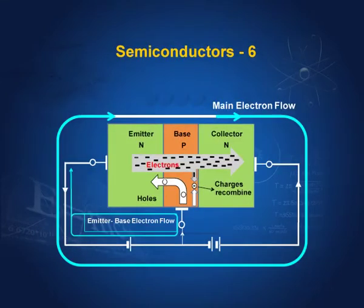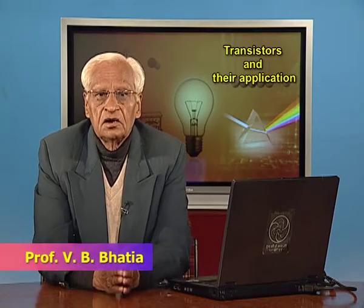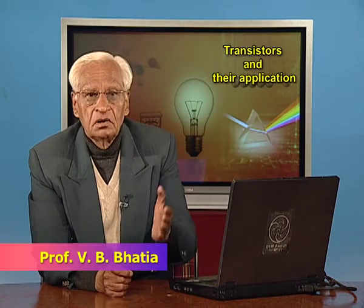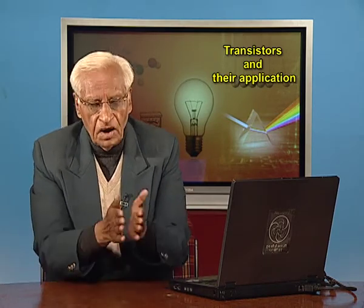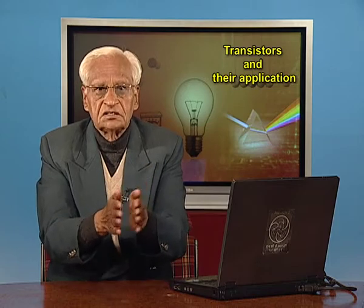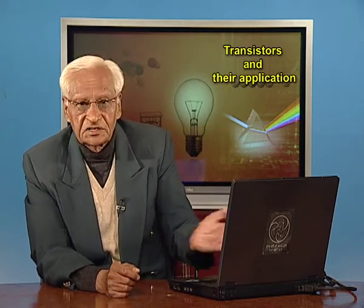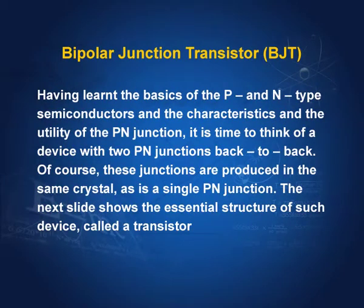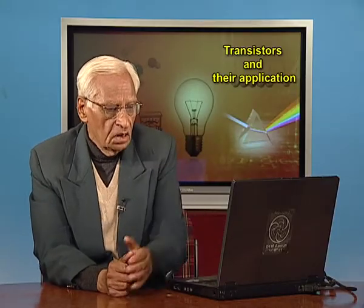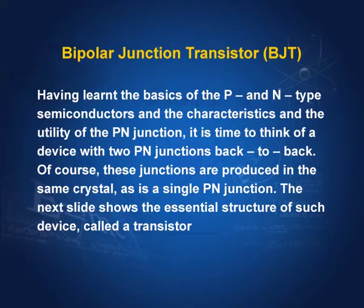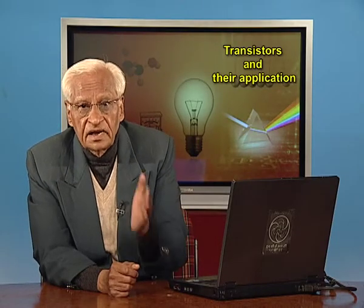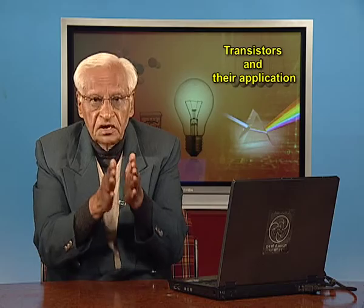In this lecture, as I promised, we shall have two p-n junctions placed side by side, and this whole arrangement is called a transistor or a bipolar junction transistor. It is called bipolar junction because there are two junctions. Having learned the basics of p and n type semiconductors and the p-n junction, it is time to think of a device with two p-n junctions back to back, produced in the same crystal, doped in the same crystal.